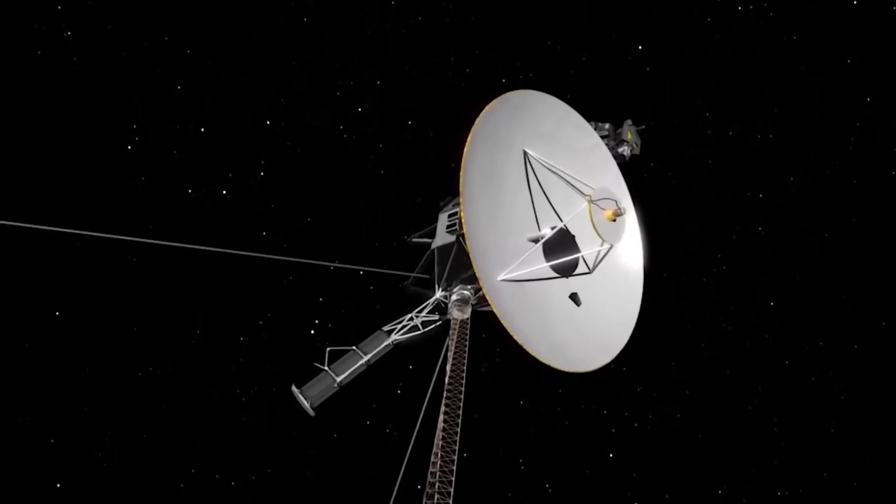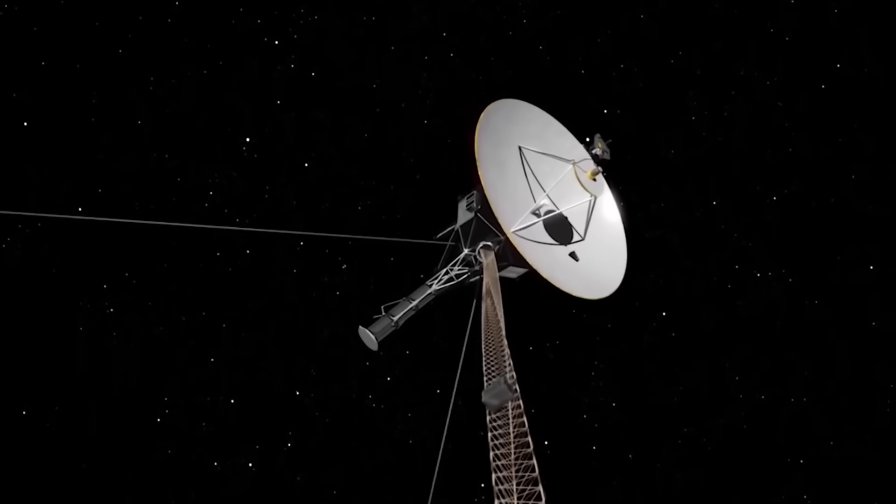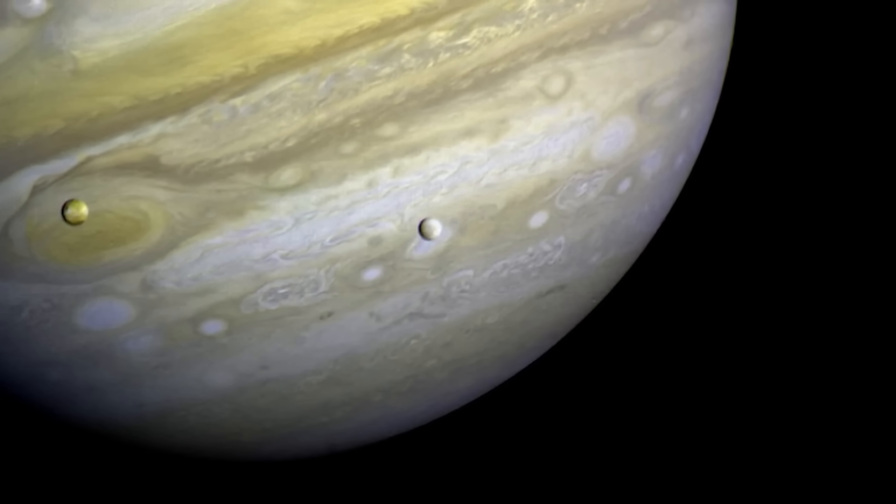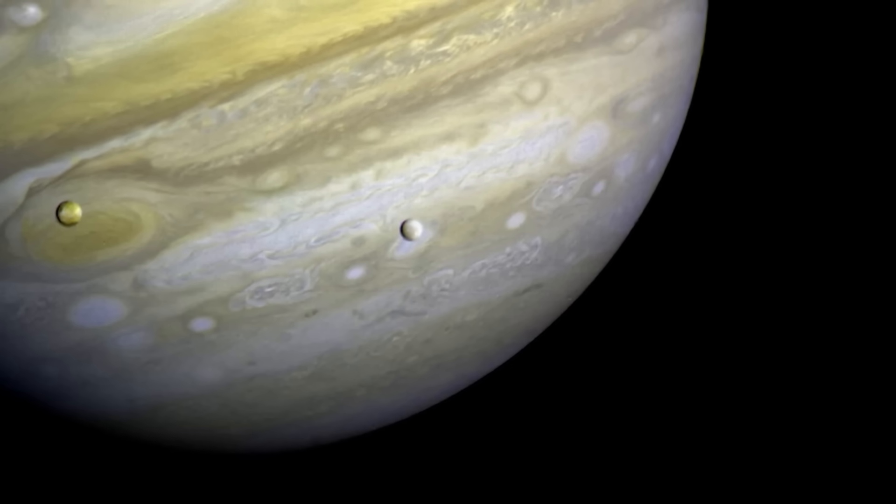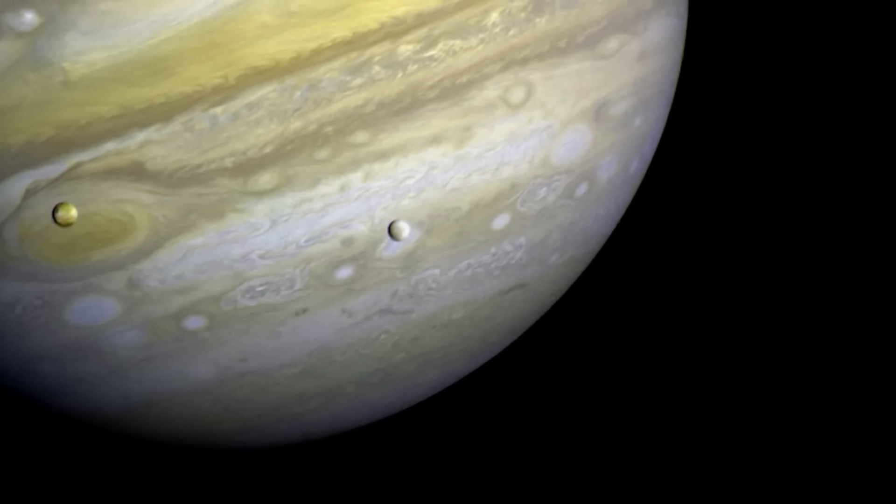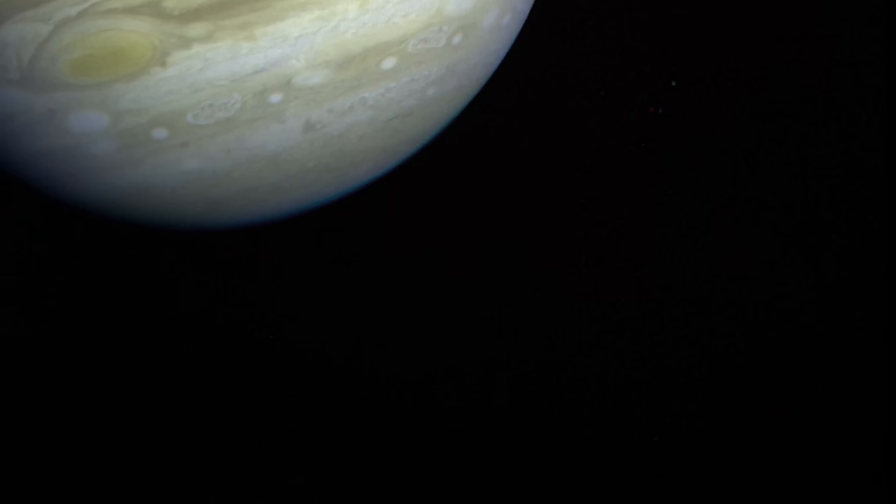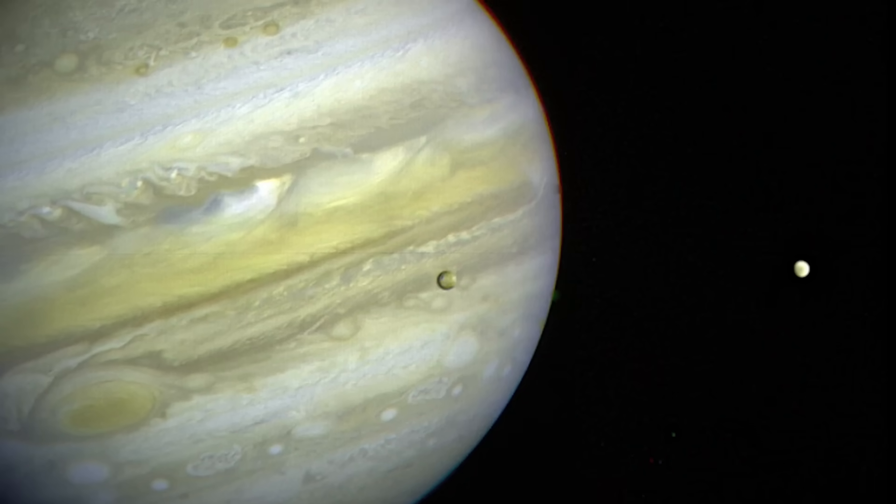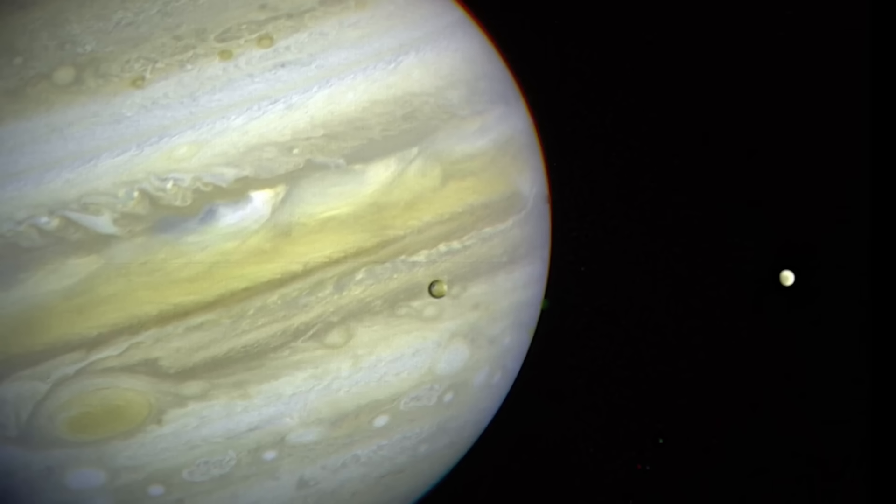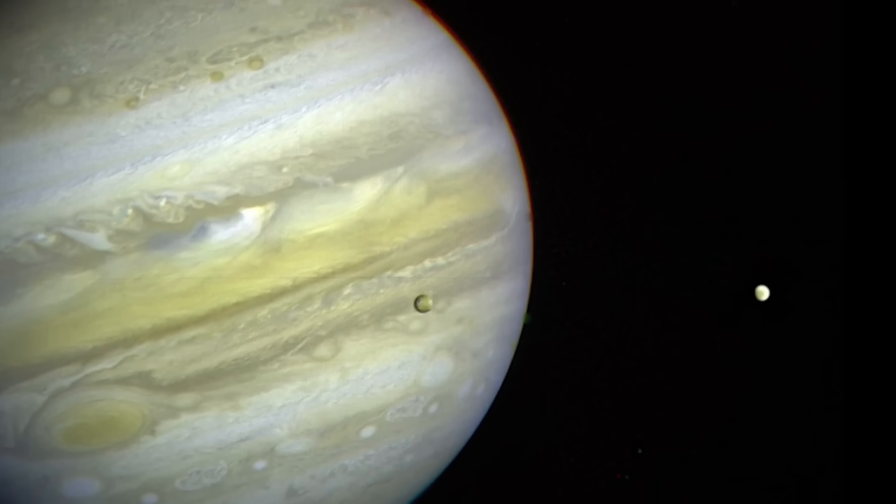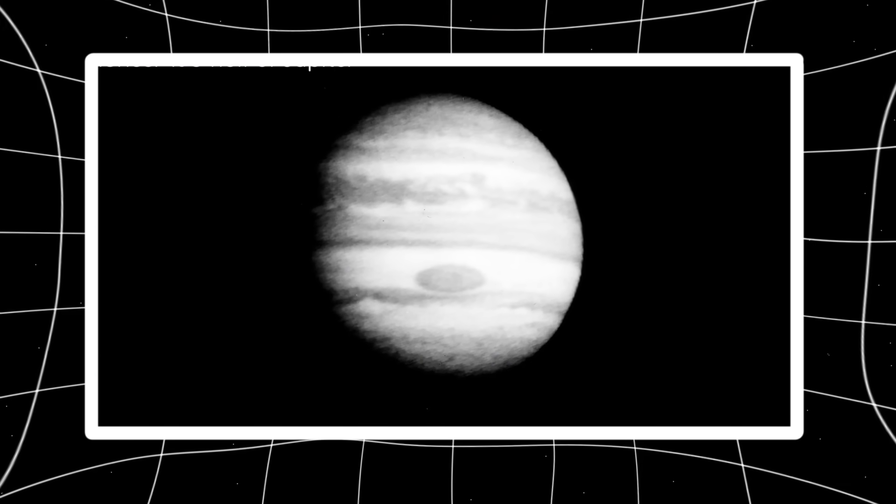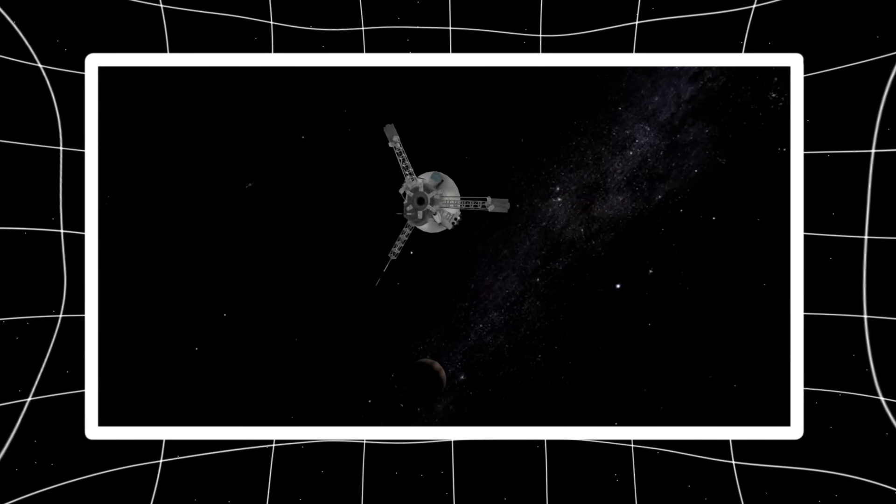If you've ever wondered what it feels like to be alone in the true sense of the word, interstellar space offers a haunting answer. Out here, where the sun is barely a pinprick and the nearest stars are light-years away, the environment is unlike anything Voyager encountered in the planetary realm. Temperatures plummet to near absolute zero, cosmic rays bombard the probes relentlessly, the radiation is harsh, the vacuum is perfect, and the magnetic fields are warped and tangled. And yet, Voyager keeps going.